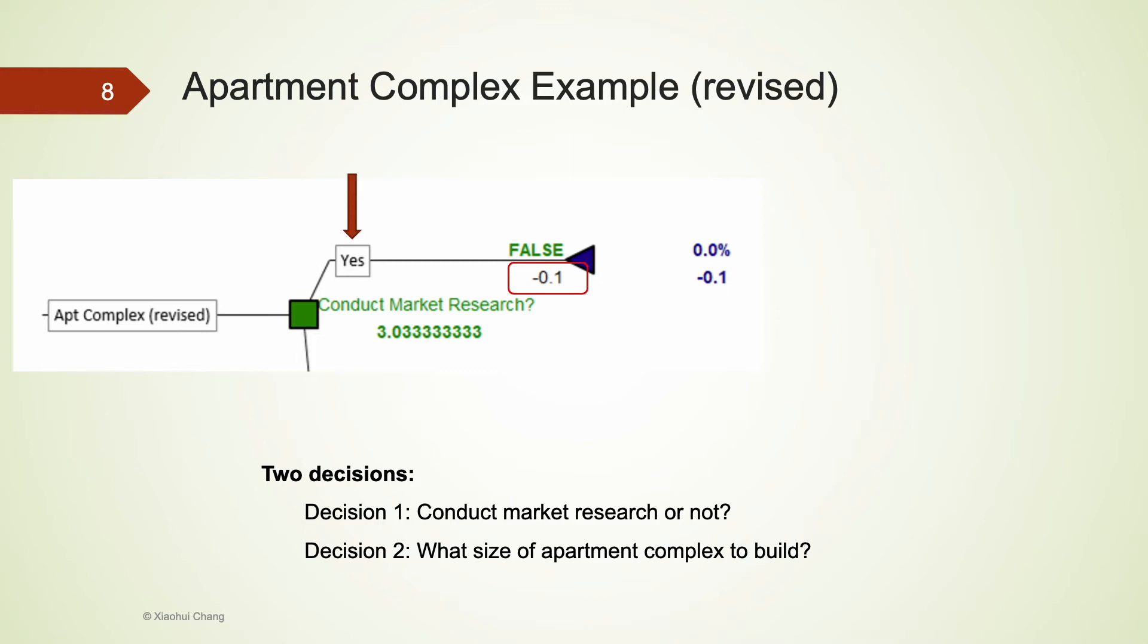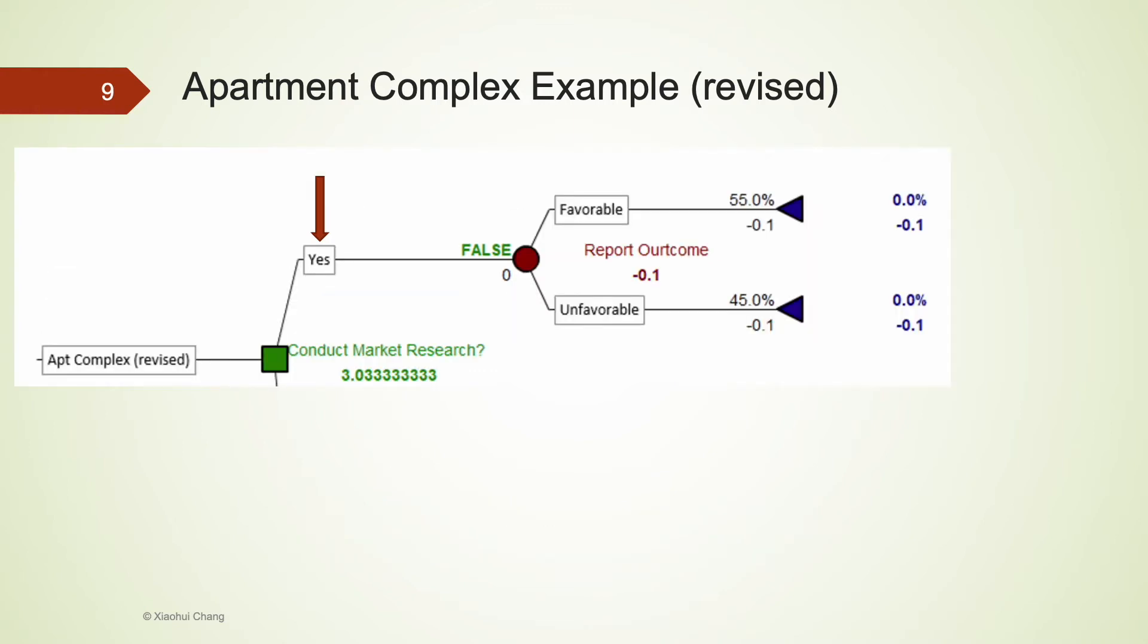The outcome is uncertain. It could be a favorable report. It could also be an unfavorable report. There is a 55% chance of getting a favorable report versus 45% chance of getting an unfavorable report.